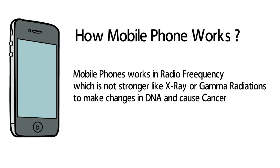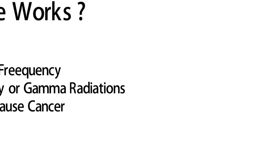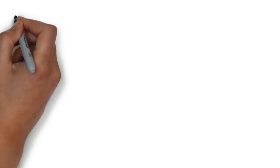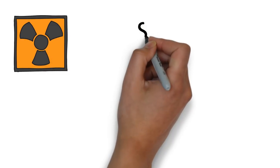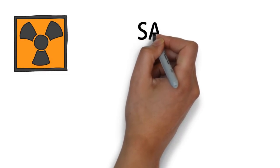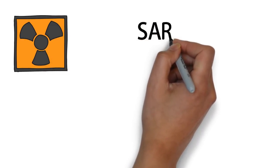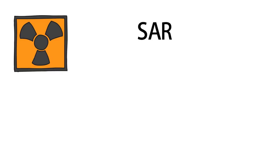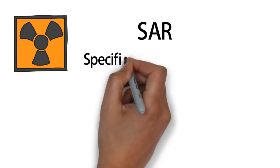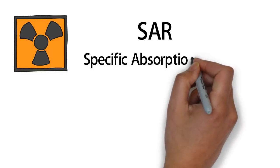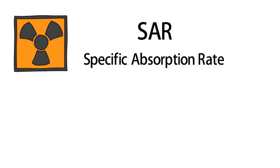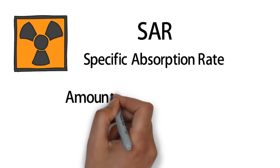My phone is using this radiation. A cell phone is using radiation, and it is the same type of radiation. In this video, the radiation affects our body. This is a phone metric called SAR Rating.